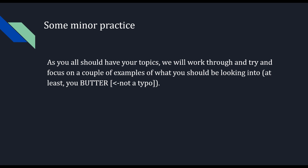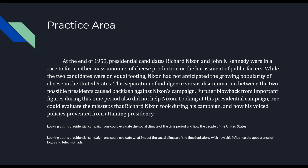I decided to do some practice since I couldn't really get a good feel for somebody else's paper. At the end of 1959, presidential candidates Richard Nixon and John F. Kennedy were in a race — Nixon to control public gas emissions, Kennedy to support cheese production. While the two candidates were on equal footing, Nixon had not anticipated the growing popularity of cheese. The separation of indulgence versus discrimination between the two caused backlash against Nixon's campaign. Looking at his campaign, one could evaluate the missteps Nixon took and how his voiced policies prevented him from attaining the presidency. This is all crap, of course, but it's an okay template to use.